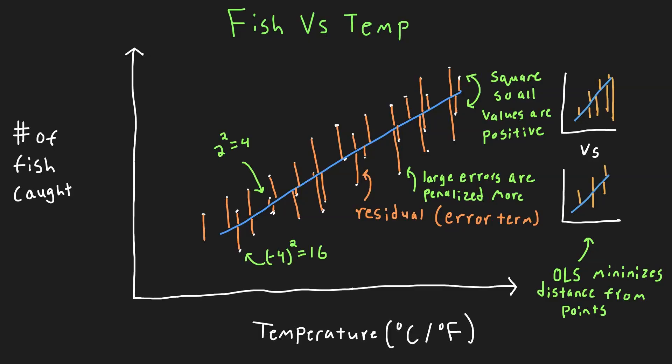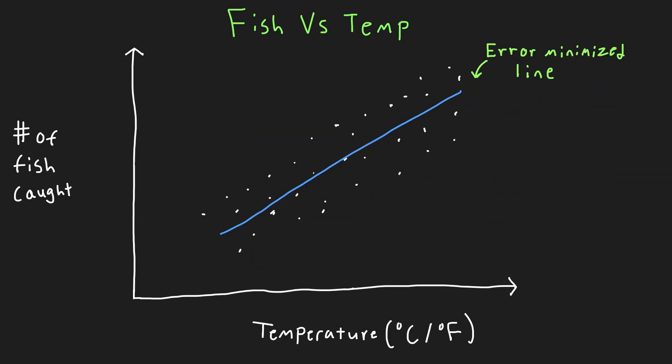For example, a squared value of 2 is only 4, but a squared value of negative 4 is 16 and penalized much more. So there we have it, we have our error minimized line from the OLS method, or the ordinary least squares method.